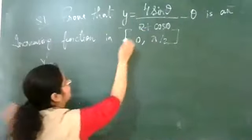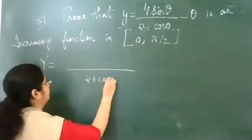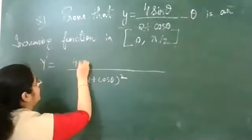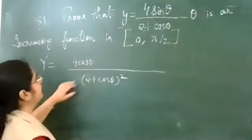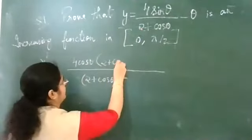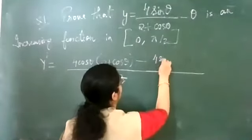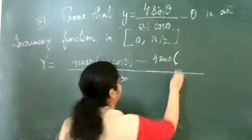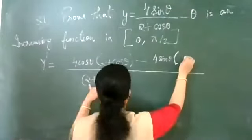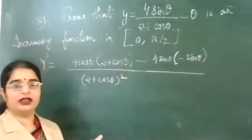We can apply the quotient rule: denominator squared is (2 + cosθ)². The differentiation of the numerator — 4 stays as is, sinθ becomes cosθ, giving 4cosθ — times denominator (2 + cosθ), minus the numerator 4sinθ multiplied by the differentiation of the denominator. The denominator is (2 + cosθ); 2 is constant so 0, and cosθ differentiates to −sinθ.